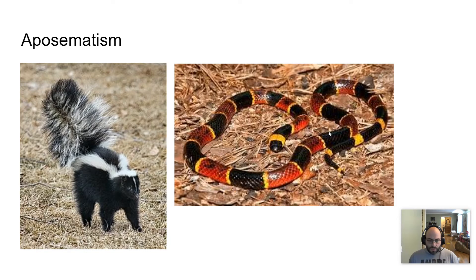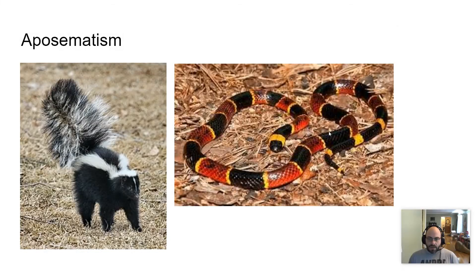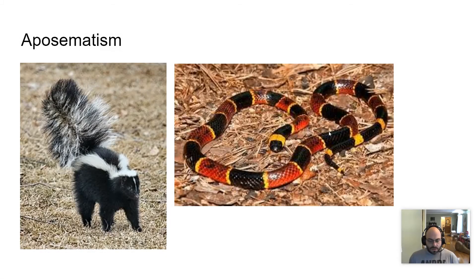These are largely learned behaviors, though there are some innate behaviors associated with fear. Fear of snakes is a great example — it's kind of an innate behavior, but can be modified through learning. You can learn that certain snakes aren't dangerous, for instance.